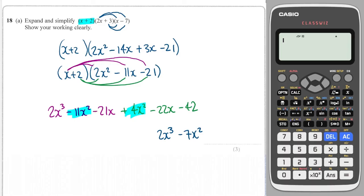And how many x's do we have? We've got minus 21 minus 22, and that's a total of minus 43. And then finally, we've just got one constant term at the end, which is minus 42.